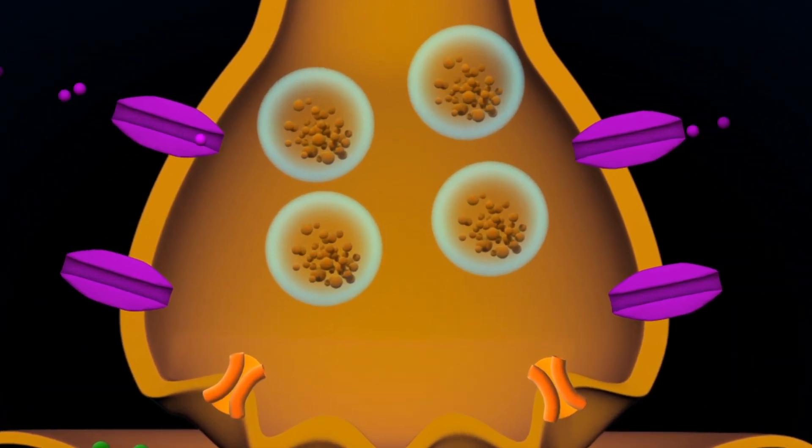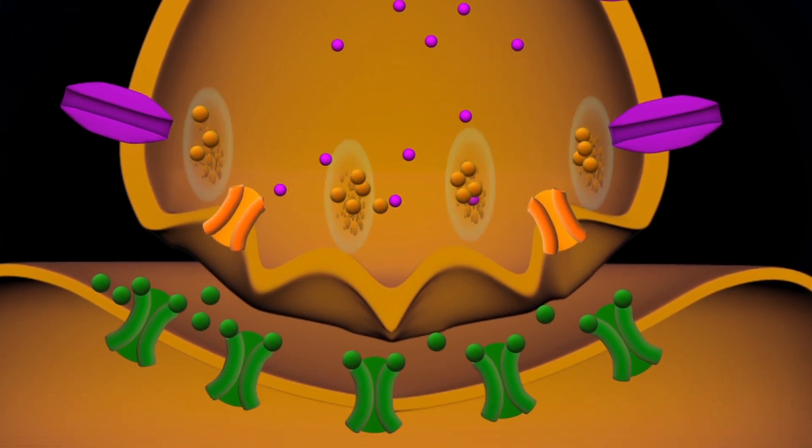The action potential leads to the opening of calcium channels. Calcium ions diffuse into the neuron, causing vesicles to fuse to the neuron's membrane and to release dopamine molecules, which diffuse into the synapse.